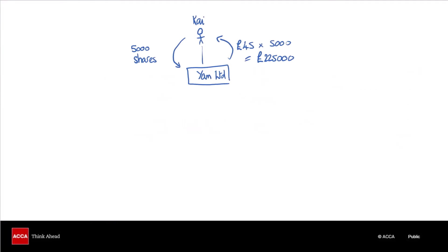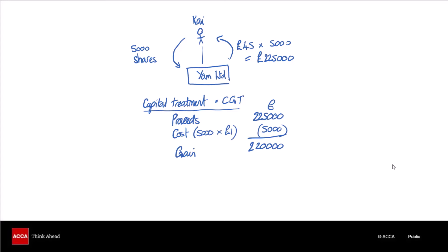Kai is selling 5,000 shares back to Yam Limited in exchange for cash of £45 each, so he will receive a total of £225,000. If we use the capital treatment that will be capital gains tax, and it's going to be a nice simple chargeable gain — proceeds less cost. Proceeds: £225,000. Kai subscribed for his shares at par, so the cost was £1 per share, which is £5,000, and that gives him a £220,000 gain.